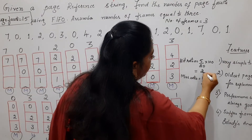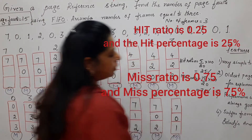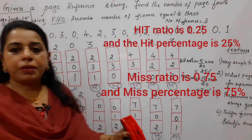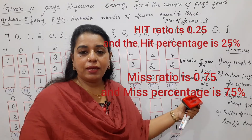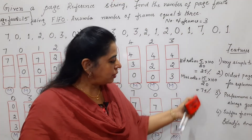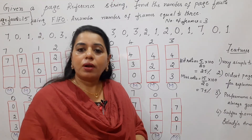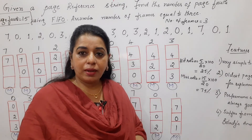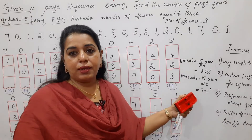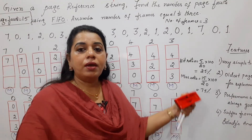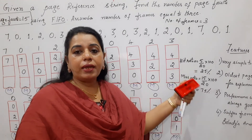Sometimes the problem asks for hit ratio and miss ratio. Hit ratio equals the number of times H appears divided by total number of pages in the reference string, multiplied by 100. Miss ratio equals the number of page faults (number of M's) divided by total pages, multiplied by 100. Here the miss ratio is 75% and the hit ratio is 25%. We expect a lesser miss ratio because more page faults mean more overhead for the operating system and lower efficiency.